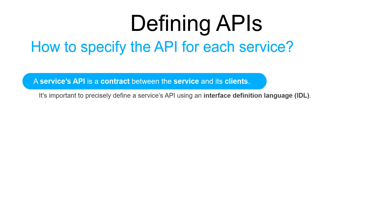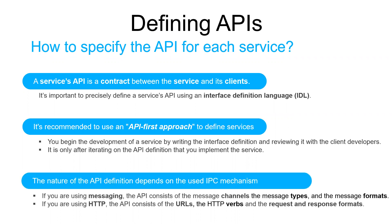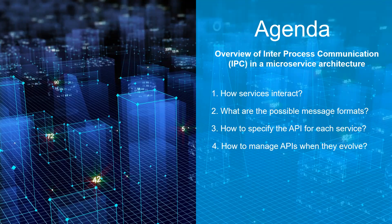Regardless of which IPC mechanism you choose, it is important to precisely define a service's API using an interface definition language. There are many good reasons for using an API-first approach: you begin development of a service by writing the interface definition and reviewing it with client developers, and only after iterating on the API definition do you implement the service. This upfront design increases your chance of building a service that meets the needs of its clients. The nature of the API definition depends on which IPC mechanism you are using — for messaging, the API consists of message channels, message types, and message formats; for HTTP, the API consists of URLs, HTTP verbs, and request/response formats.